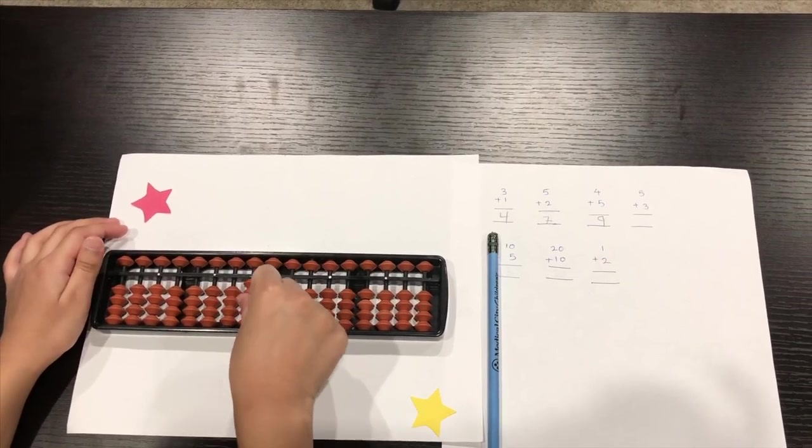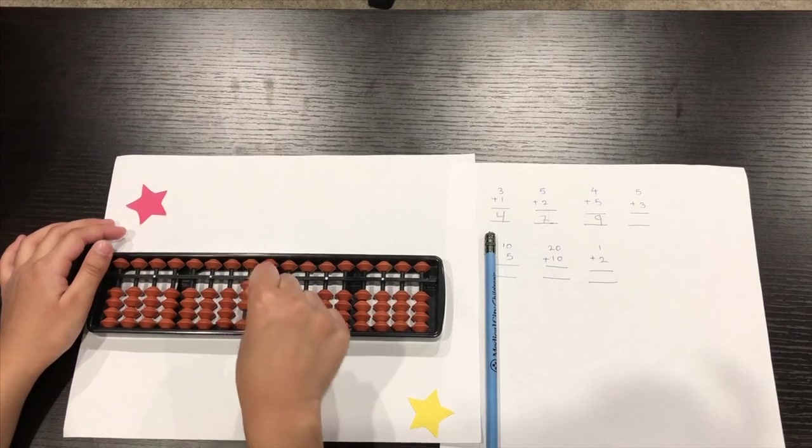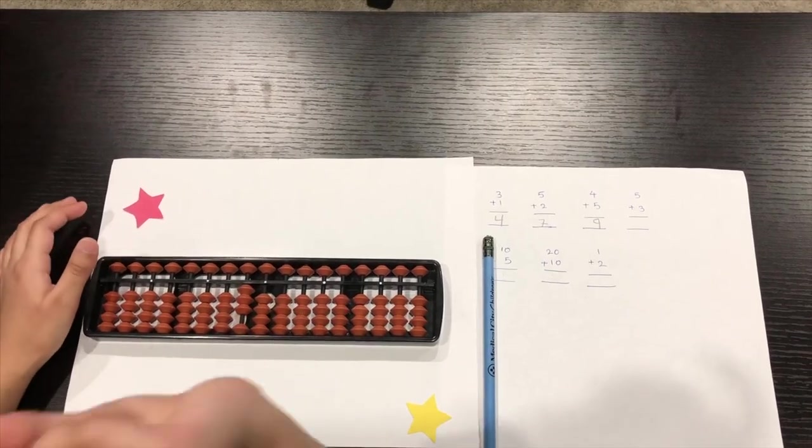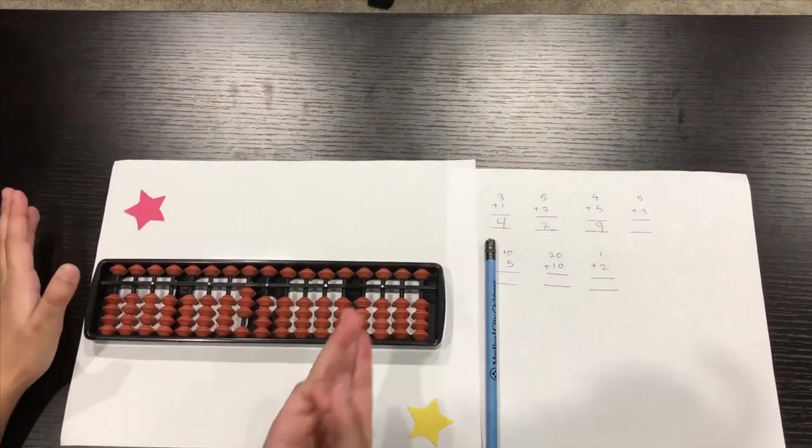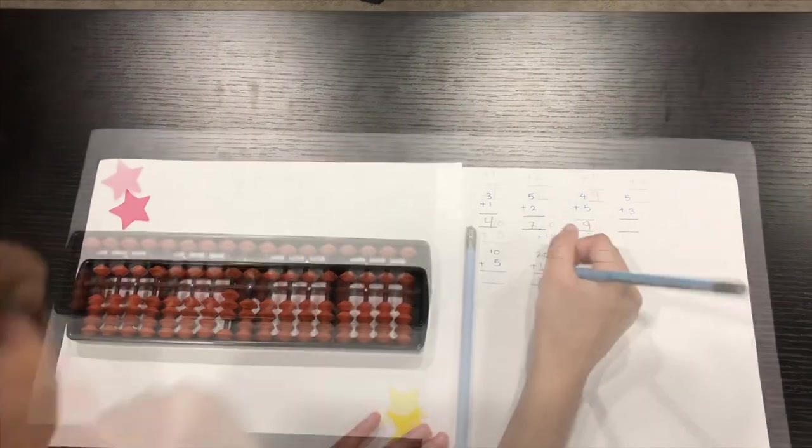For twenty equals. That means all of this, one, two, three. That means three tens equals thirty. That means thirty is the answer.